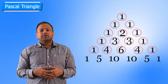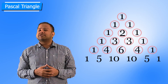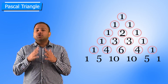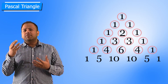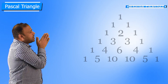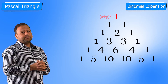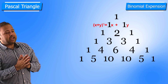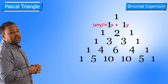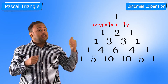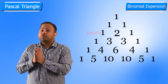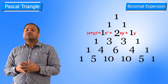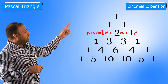This is Meru Prasthar, or you can call it Pascal's Triangle. It represents many things we have seen in the binomial theorem. The first row represents (x+y)^0. The second row represents (x+y)^1, which gives coefficients 1 and 1. Then (x+y)^2 equals x² + 2xy + y², giving coefficients 1, 2, and 1.